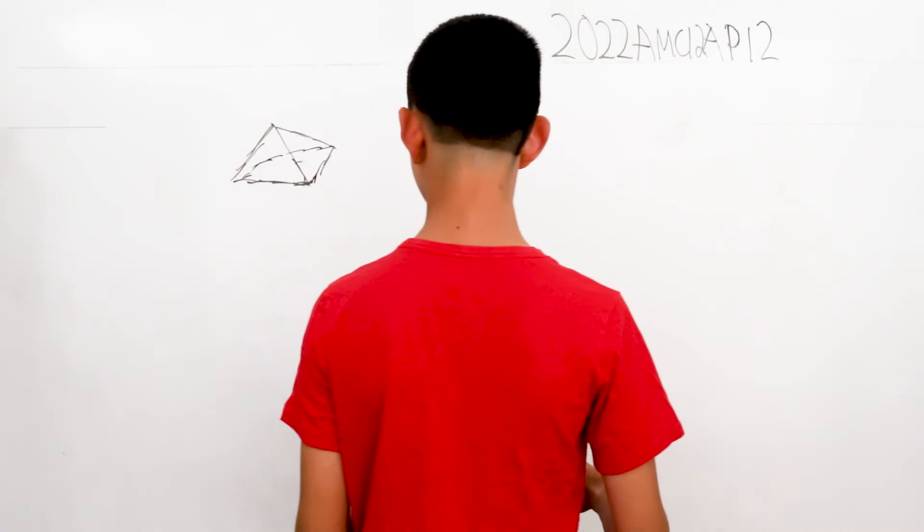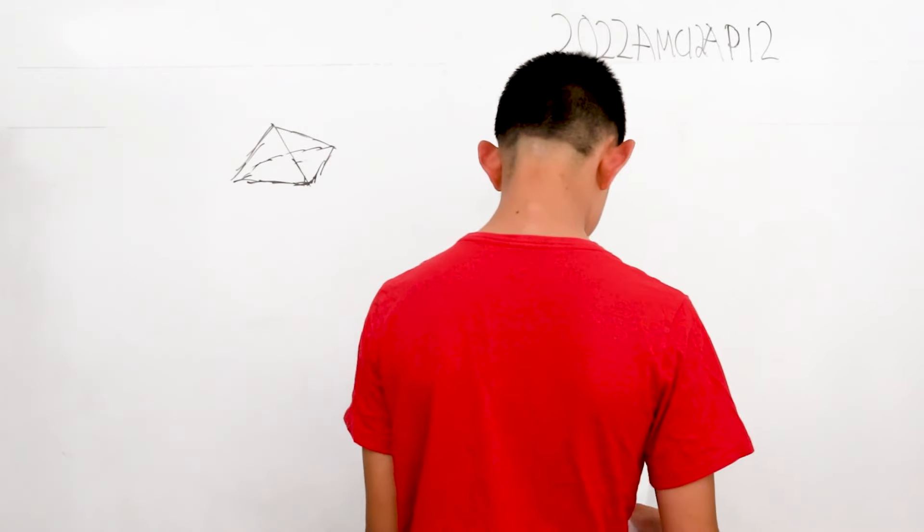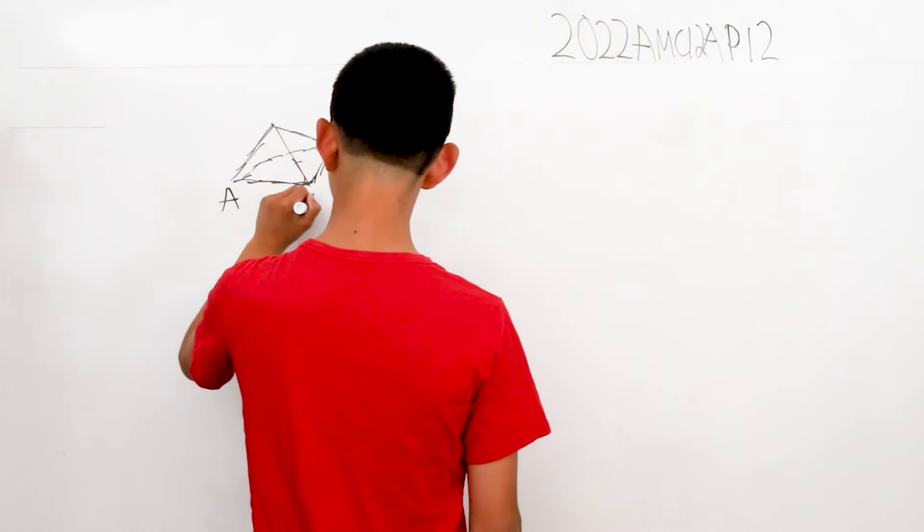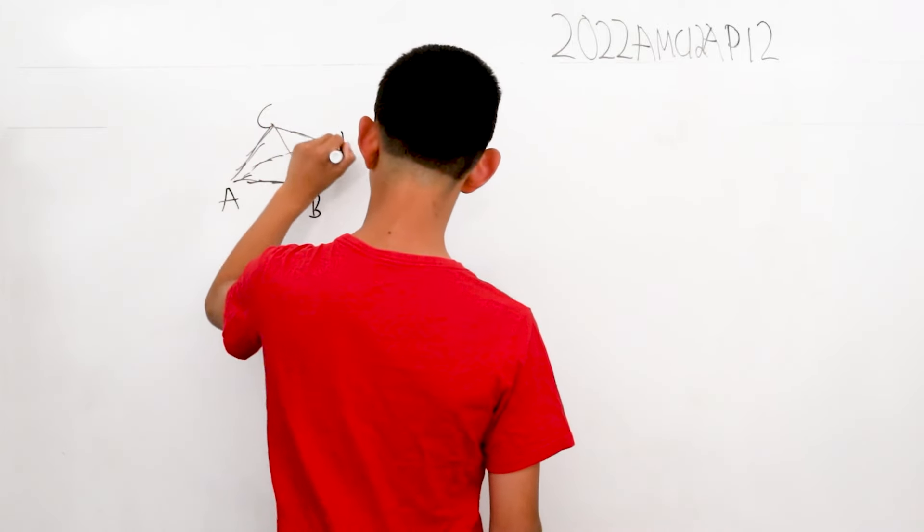A tetrahedron. And we want to, and it's labeled A, B, C, and D at four points.